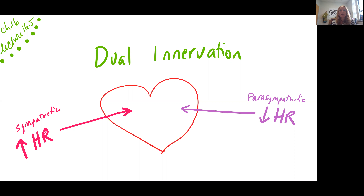Our topic for this presentation is first dual innervation, and we have alluded to this. We've talked about the sympathetic division and the parasympathetic division as being opposites of each other. So if the sympathetic division is increasing heart rate, then the parasympathetic division would decrease the heart rate. And if they're both controlling the heart rate, they have to in some way be controlling that cardiac muscle, meaning the cardiac muscle has to be controlled by both the sympathetic and the parasympathetic division. So dual innervation is just as simple as that.